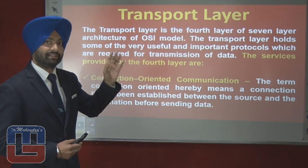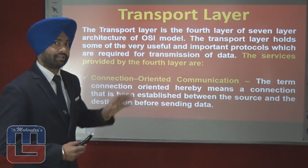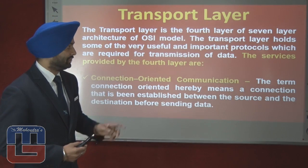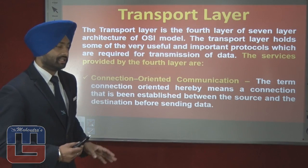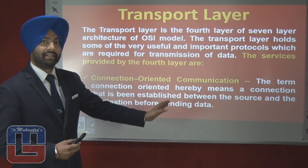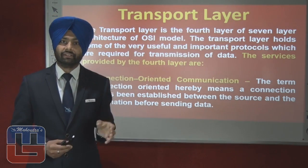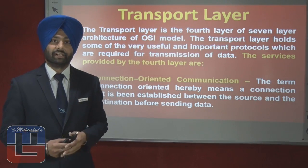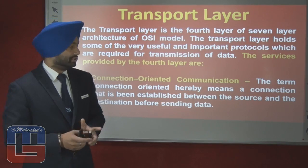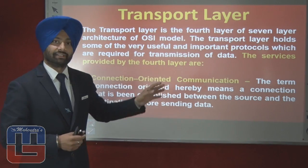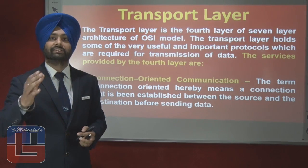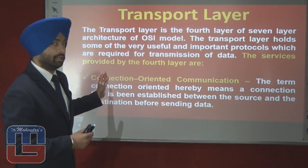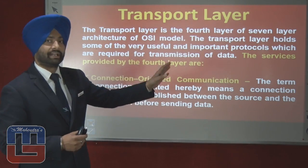Let us have a view of the services provided by the transport layer. The first service is connection-oriented communication. This means a connection is established between the source and the destination before sending data. If the source wants to send a data packet to a destination located in segment C of a network, the source will establish a session with the destination first, and then it will send the data. This policy of the transport layer is known as connection-oriented communication.